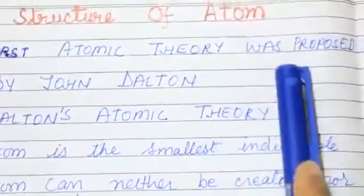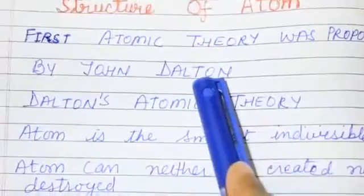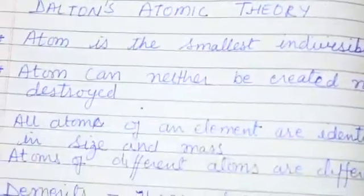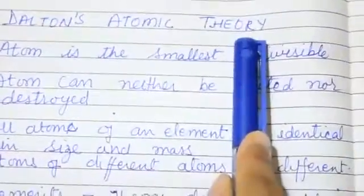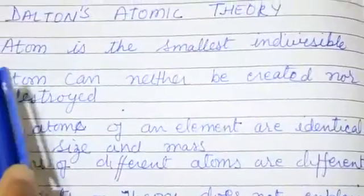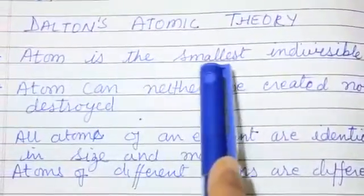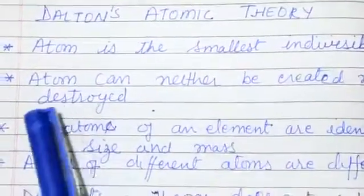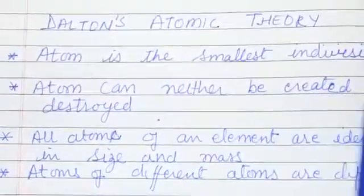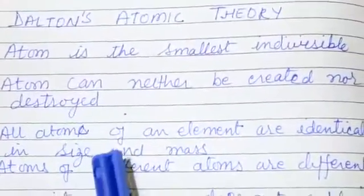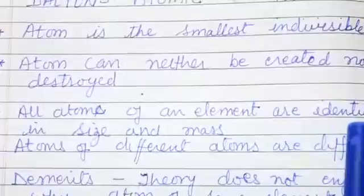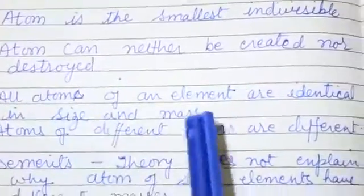First atomic theory was proposed by John Dalton. Dalton stated that atom is the smallest individual, atom can neither be created nor be destroyed, all atoms of an element are identical in size and mass.